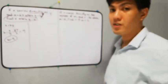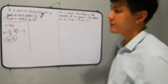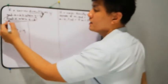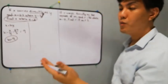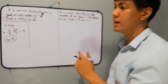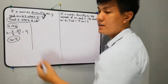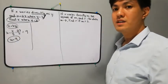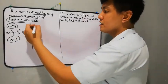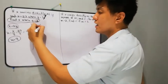Now for the second part: 'find x when y is equal to 7.' We will now use our equation, which is x is equal to ky.